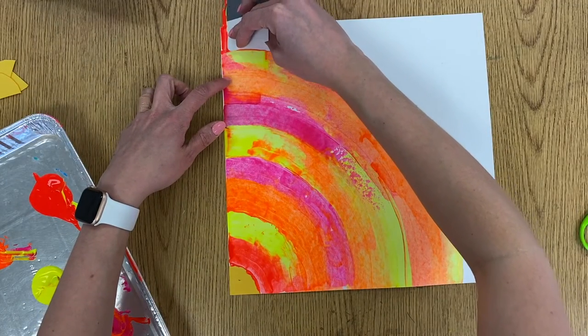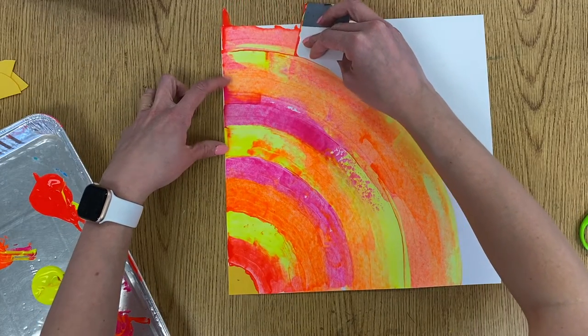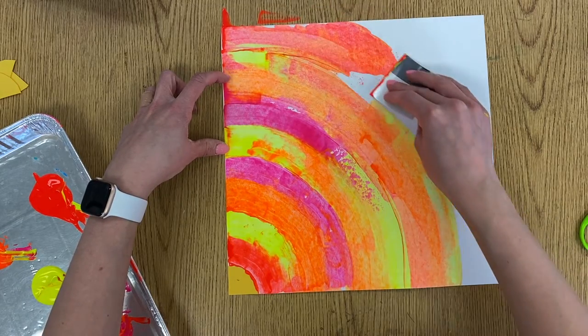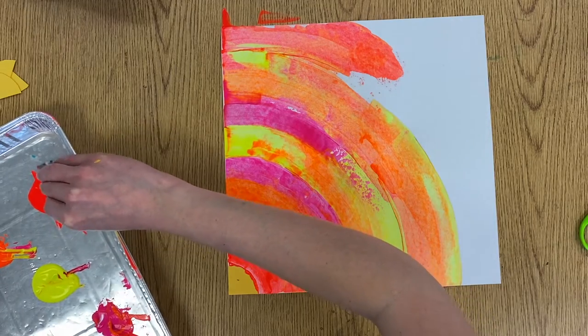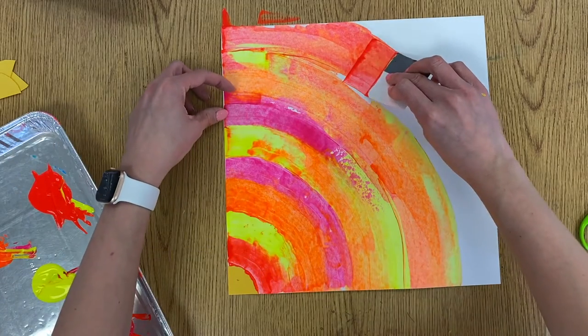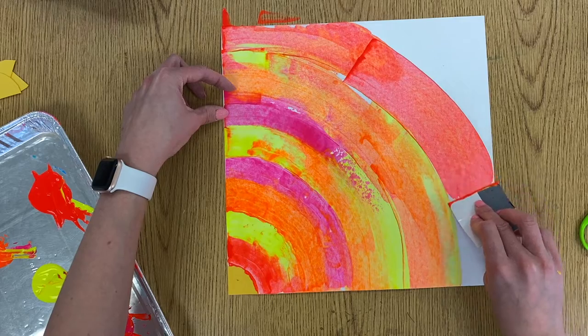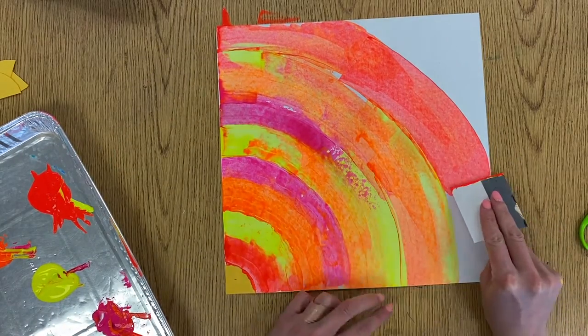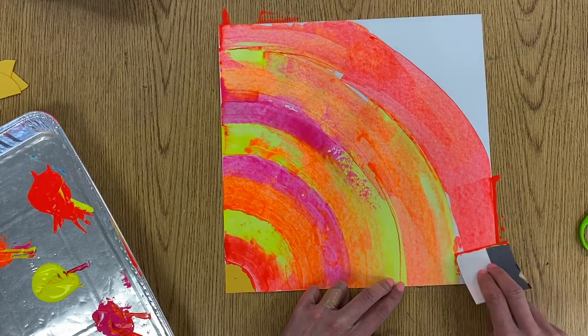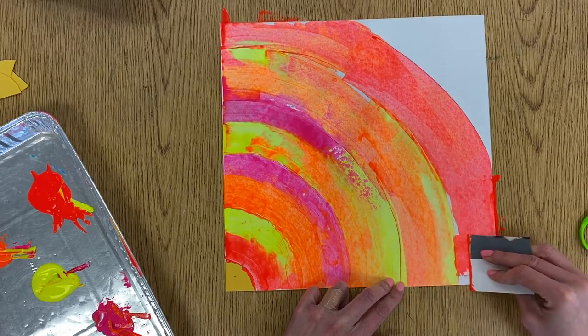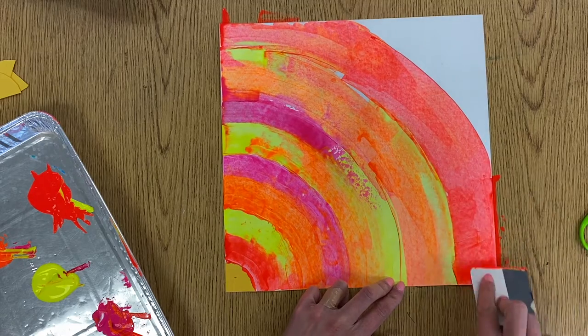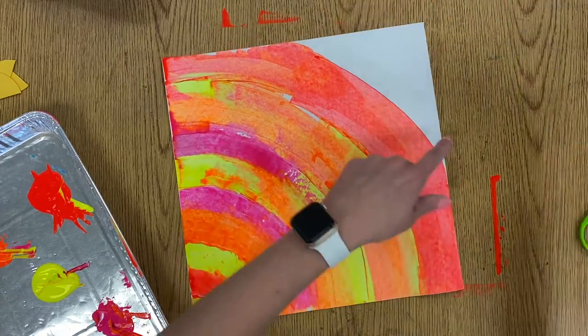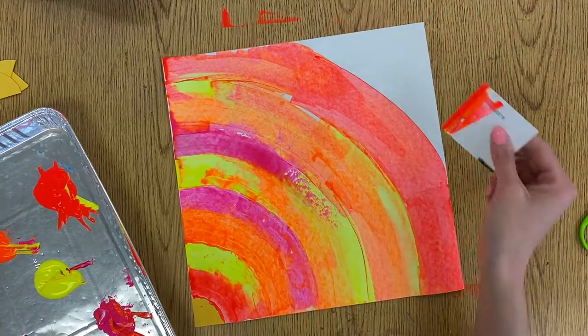I am at the very top of my paper, so part of this is going to go off my paper a little bit and that's okay. I'm going to fit one last stripe up here with my red. Right here my cardboard's bigger than my paper, but that's okay because I want it to go off the page.